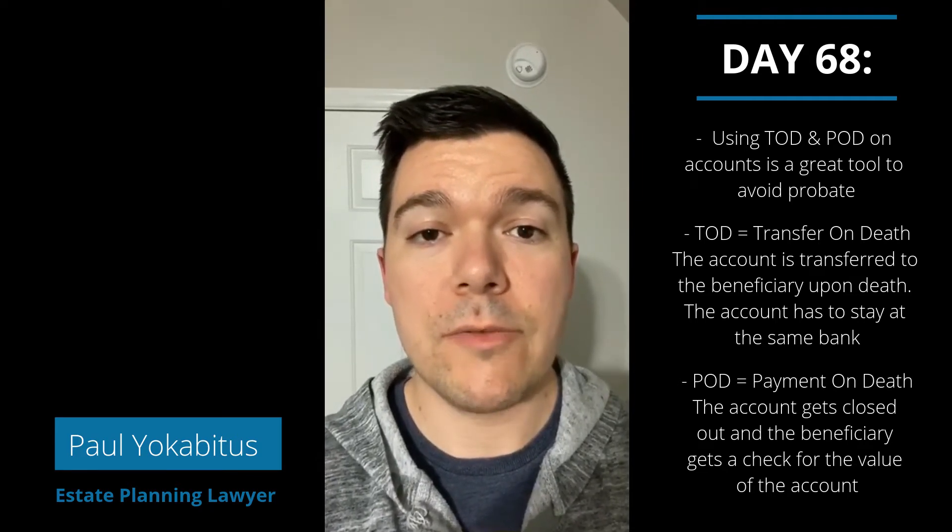One is called a transfer on death, or TOD. That means you designate a person to receive the actual account after you're gone. If you pass away, the account stays at the same bank — it just gets retitled to the name of the beneficiary. That may be fine if you have a national bank or at least a very large regional bank and the beneficiary lives in that same region, but it's not as easy if it's a small credit union in your hometown that you no longer live in, for instance.